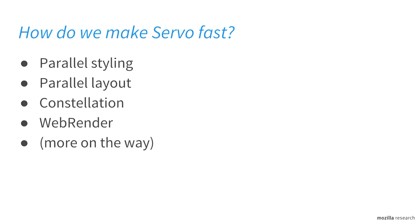We do parallel style computation, we lay out the page in parallel, we organize the work the browser does in a novel way which we call the constellation, and then we move painting to the GPU with WebRender. We have some other stuff we're working on that's not quite ready for a full presentation yet. Two years ago I was here and talked mostly about the first two, so this time we'll get to learn about the rest.